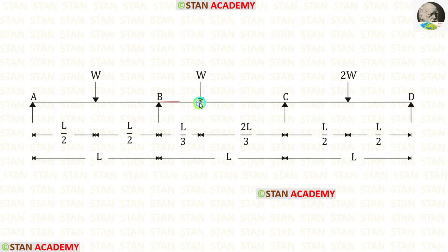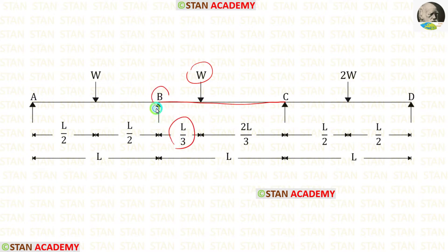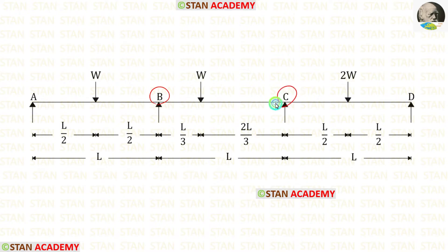Now let us take span BC. In span BC, we have an eccentric point load W acting at a distance of L/3 from joint B. In this span, in joint B there will be a plastic hinge, in joint C there will be another plastic hinge, and under the load W there will be a third plastic hinge. Let us take this span and do the second mechanism.